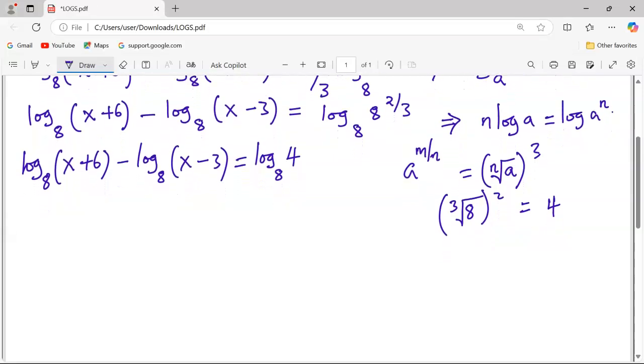And with this now, we can go to the laws of logarithms now, the second law of logarithm, which says that when there is a subtraction, we can just divide the numbers. So we will just have x plus 6 divided by x minus 3.